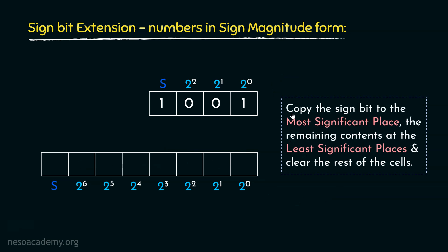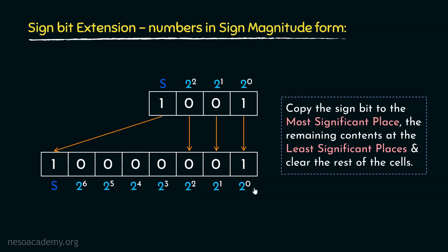Instead, what we will do is copy the sign bit to the most significant place in the larger register first. Thereafter, we copy the remaining contents to the least significant places, and finally clear the rest of the cells with zeros. Observing both registers, the ones are placed under the sign bit and under 2⁰, exactly as in the original. So in both cases, we are storing minus 1. In summary, for numbers in sign magnitude form transferred from a smaller register to a larger one: copy the sign bit to the most significant place, copy the remaining contents to the least significant places, and then clear the rest of the cells.